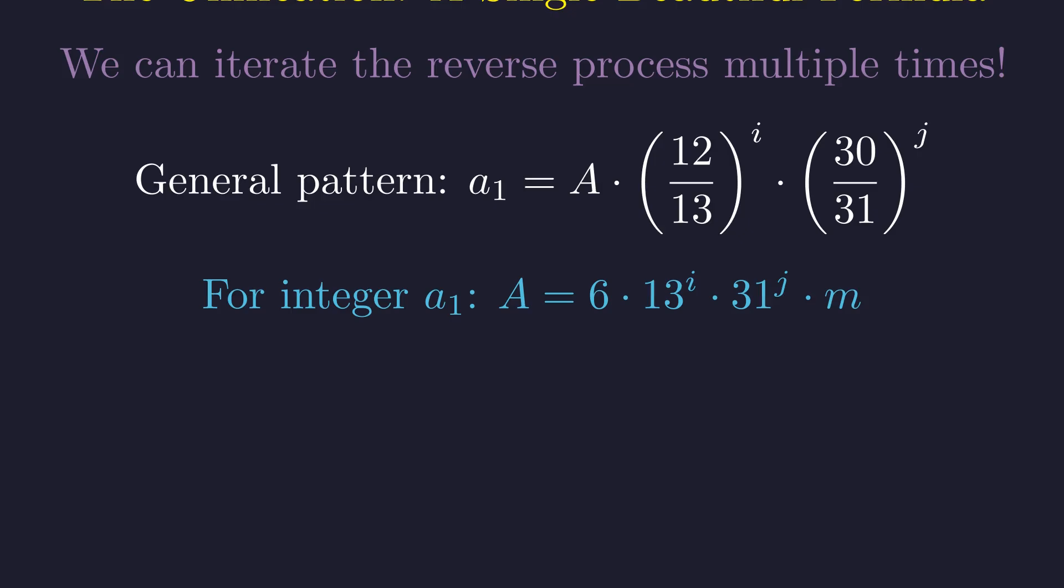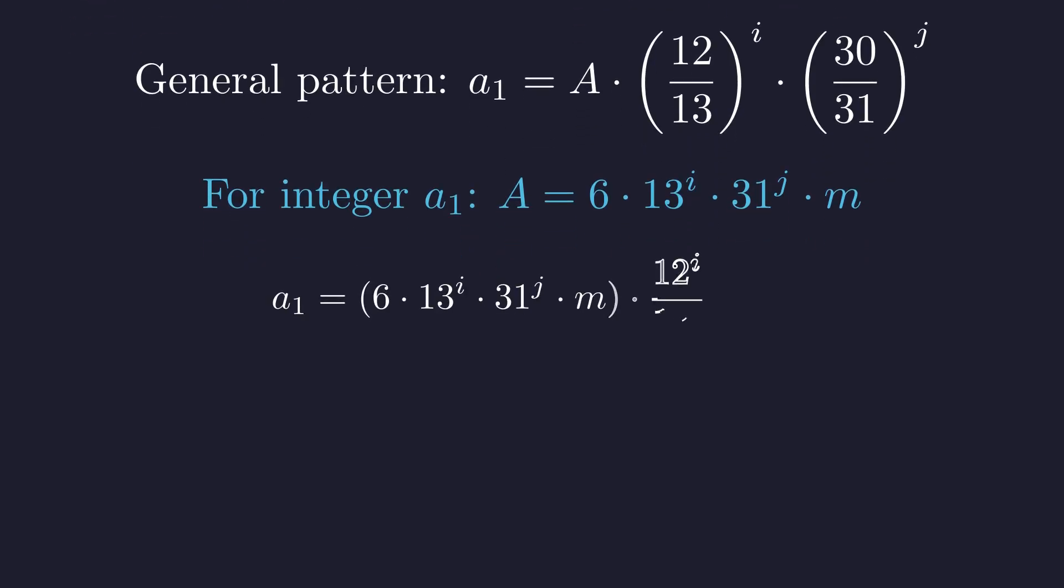For A1 to be an integer, the stable number A must be divisible by 13^i and 31^j. We also know A must be stable. This means A must have the form 6 times 13^i times 31^j times m, where m is not divisible by 2 or 5. Substituting this form of A back into the equation for A1, we arrive at the general solution.